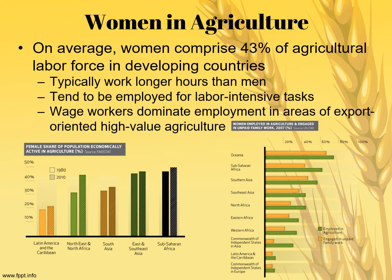Lastly, women in agriculture: on average, women comprise 43% of the agricultural labor force in developing countries, and typically work longer hours than men. They tend to be employed for more labor-intensive tasks and dominate employment in export-oriented, high-value agriculture as wage workers. Women are extremely important, especially in subsistence agriculture in less developed countries. That concludes part one — Unit 5, Agriculture. Next, we're going to review Unit 6, Industry and Development.